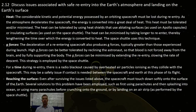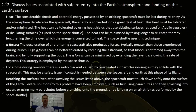So, heat. There's a considerable amount of kinetic and potential energy possessed by the orbiting spacecraft which must be lost during re-entry. As the atmosphere decelerates the spacecraft, the energy is converted into a great deal of heat. The heat must be tolerated or minimized. The heat can be tolerated by using heat shields, such as ablating surfaces or insulating surfaces.